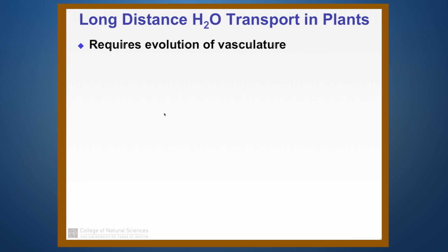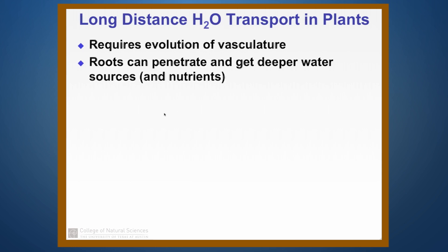The first thing is that you have to have evolution of some kind of vasculature to make this happen. Just as in animals you had evolution of a vascular system for moving things around in blood, you have evolution of vasculature in plants to move things around. Once you've got vasculature, roots can penetrate deeper into the soil so they can go down and get deeper water sources and more nutrients, which makes it easier for the plants to live in places where water availability is not all that good at the surface.